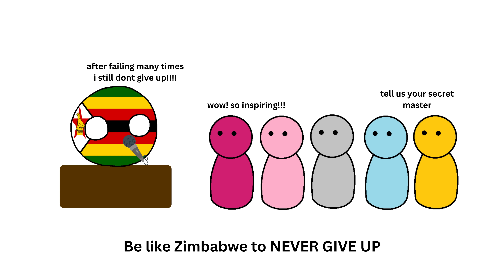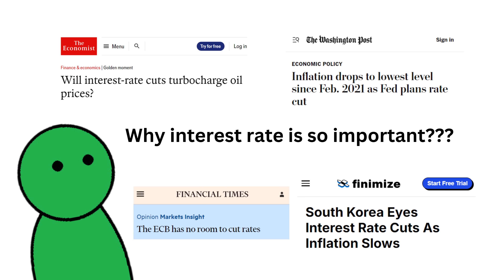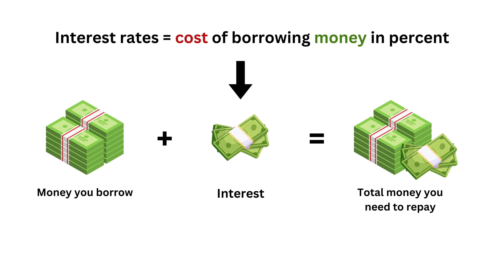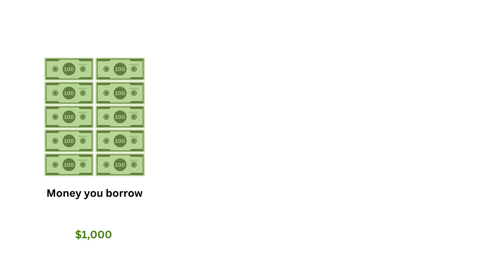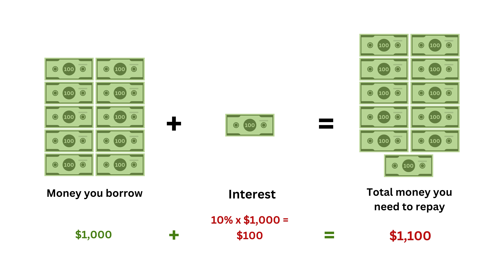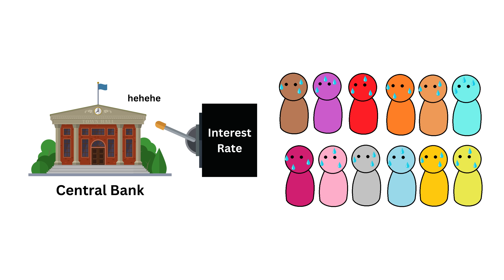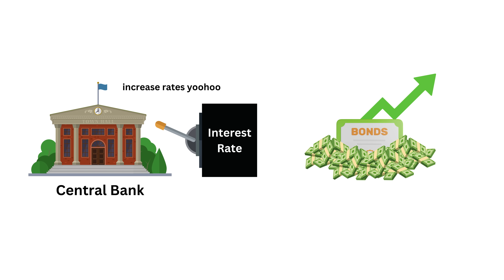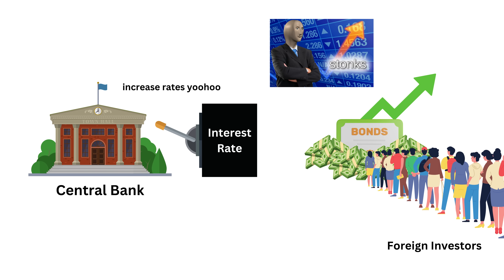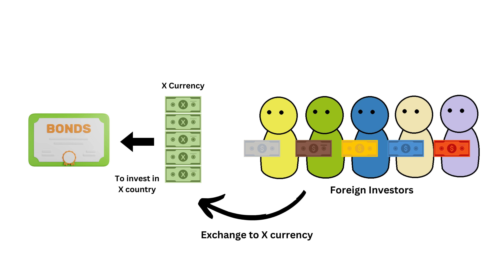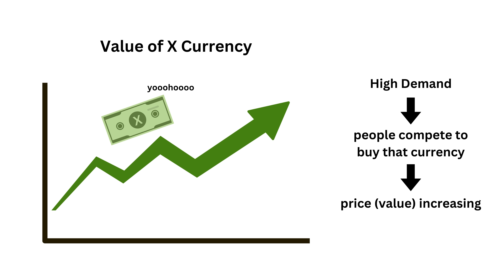So, plus one point for never giving up to Zimbabwe. Section 2: Interest Rate. You might have heard about interest rates before and wondered why they matter so much. Interest rates are the cost of borrowing money in percent. If you borrow $1,000 at a 10% interest rate, you have to pay back $1,000 plus an extra $100 as interest. Central banks, like the Federal Reserve in the U.S., set interest rates in their countries. When a country has high interest rates, it offers better returns on investments, attracting foreign investors. These investors need to buy that country's currency to invest, which increases demand and strengthens the currency.